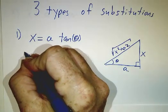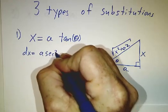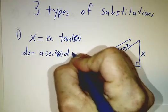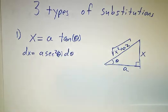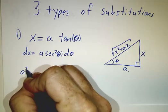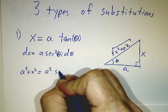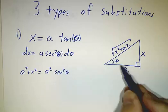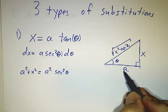Now we'll do our calculus. We say dx is a secant squared theta dθ, because the derivative of tangent is secant squared. And we notice that a squared plus x squared is a squared secant squared theta. Secant squared is hypotenuse squared divided by adjacent squared, so that's x squared plus a squared over a squared.